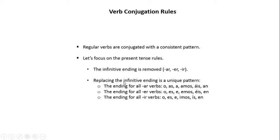Then we replace the infinitive ending with a unique pattern. The ending for all AR verbs is O, AS, A, AMOS, AIS, and AN. The ending for all ER verbs is O, S, E, EMOS, AIS, and AN. The ending for all IR verbs is O, S, E, EMOS, AIS, and AN.